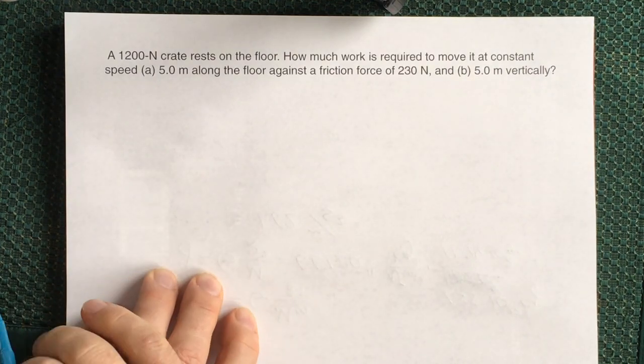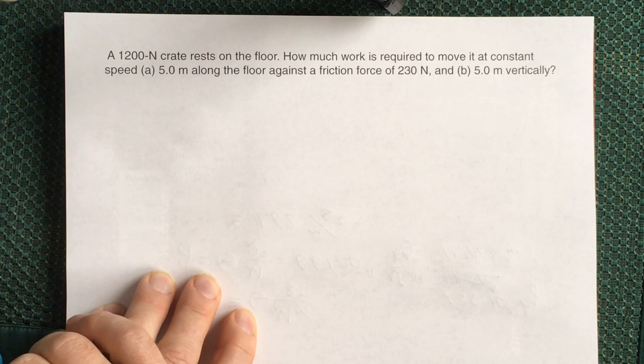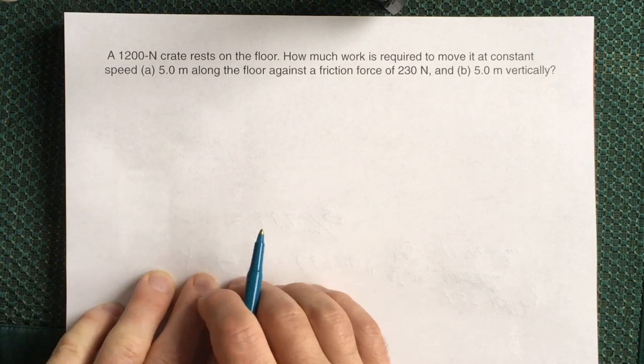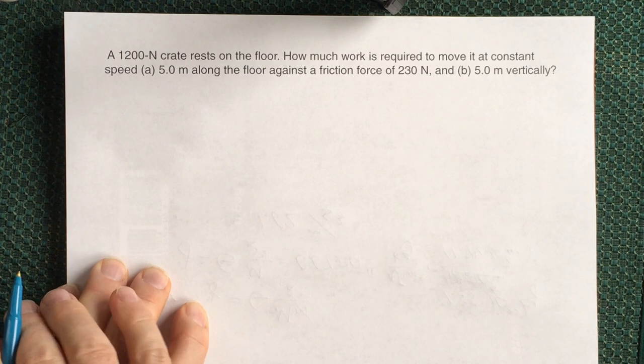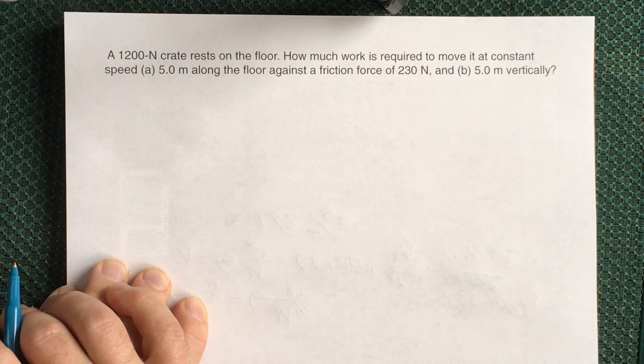A 1200 newton crate rests on the floor. How much work is required to move it at a constant speed 5 meters along the floor against a friction force of 230 newtons and b, 5 meters vertically?